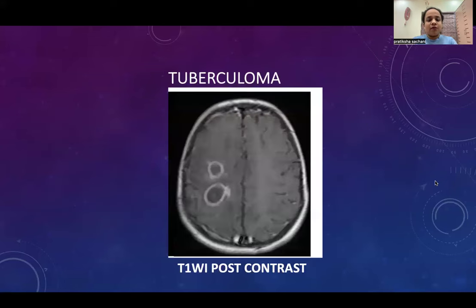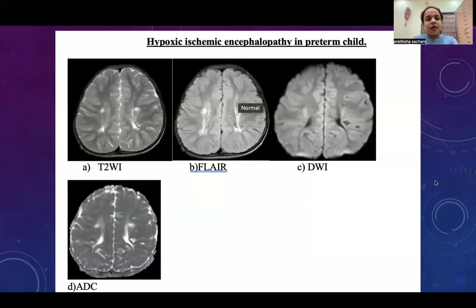This is a case of a pediatric patient with pulmonary TB who presented for MRI brain. This is the axial section post-contrast image showing ring-enhancing lesions in the right frontoparietal region, which was suggestive of tuberculoma. This is a case of HIE in a preterm child showing hyperintensities in T2 FLAIR periventricular region with no restriction on DWI.